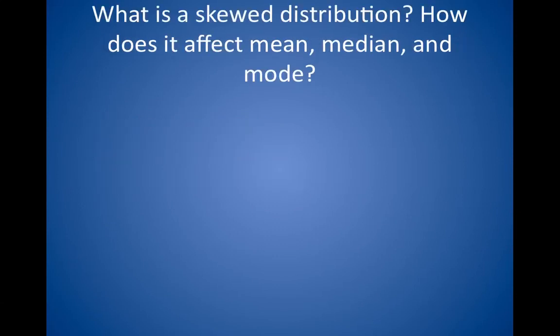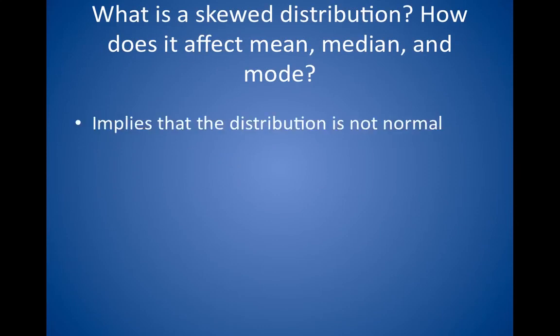What is a skewed distribution? How does it affect mean, median, and mode? A skewed distribution implies that the distribution is not normal — in other words, the data do not conform to a perfect bell-shaped curve. Positive skew is an asymmetric distribution with an excess of high values; the tail of the curve is on the right, and mean > median > mode. Negative skew is an asymmetric distribution with an excess of low values; the tail of the curve is on the left, and mean < median < mode. Because they are not normal distributions, standard deviation and mean are less meaningful values.